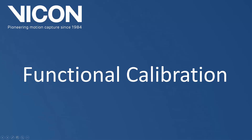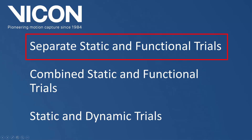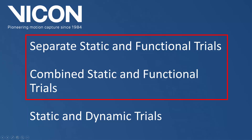For all subjects where you want to use a custom VST, make sure that you have at least a static and a functional trial. There are different ways you can do this. The first is to capture separate static and functional trials. The second is to capture a single functional trial where the subject starts in the base pose. And the last is to capture a static trial and use one of the dynamic trials for the functional calibration. The first two methods are the preferred workflows while the third would be used in cases where a functional range of motion trial may not be possible.